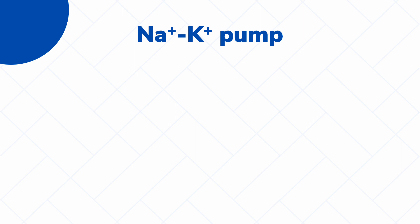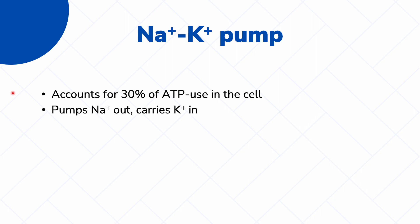First, we have the sodium-potassium pump. This is a pump that is highly used in the cell — it actually accounts for 30% of all ATP use in the cell. The function of this pump is very simple: it pumps sodium ions out and carries potassium ions in. This pump is an example of an active pump, meaning it needs to use energy in the form of ATP. So, this pump is also known as the sodium-potassium ATPase.